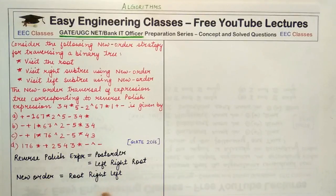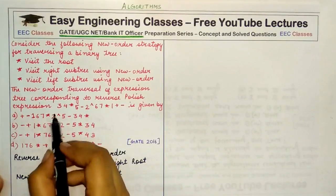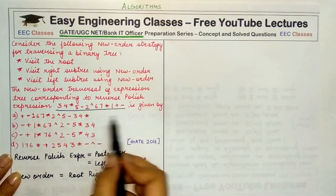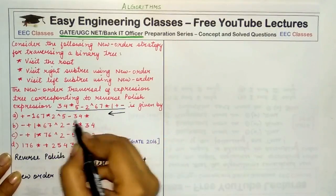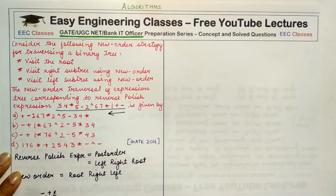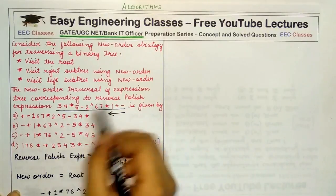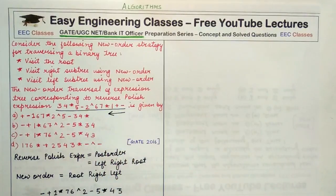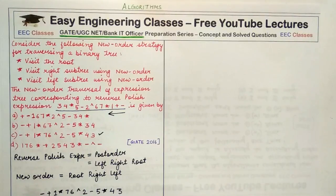Since post order is left-right-root, if I reverse it I get root-right-left, which is exactly the new order. So if you write the given post order expression in reverse order — starting from the right and going to the left — you get: minus, plus, one, star, seven, six, two, minus, star, four, three. This is the correct answer and corresponds to option C.